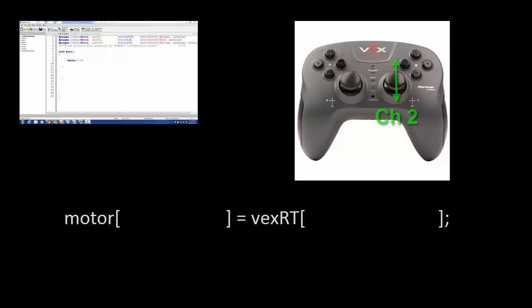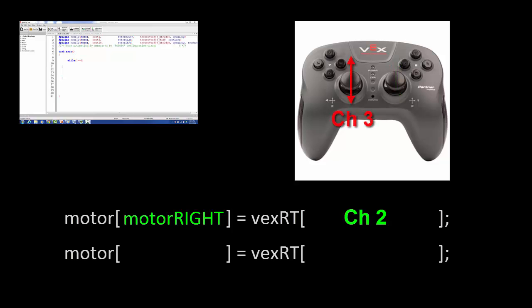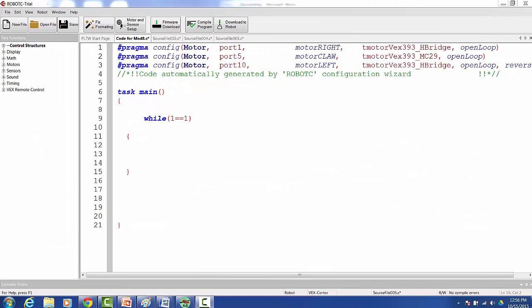In our case, we want the right joystick to control the right motor. That means motor right will be linked with channel 2. We also want the left joystick to control the left motor. That means motor left will be linked with channel 3. Let's place those commands into Robot C.